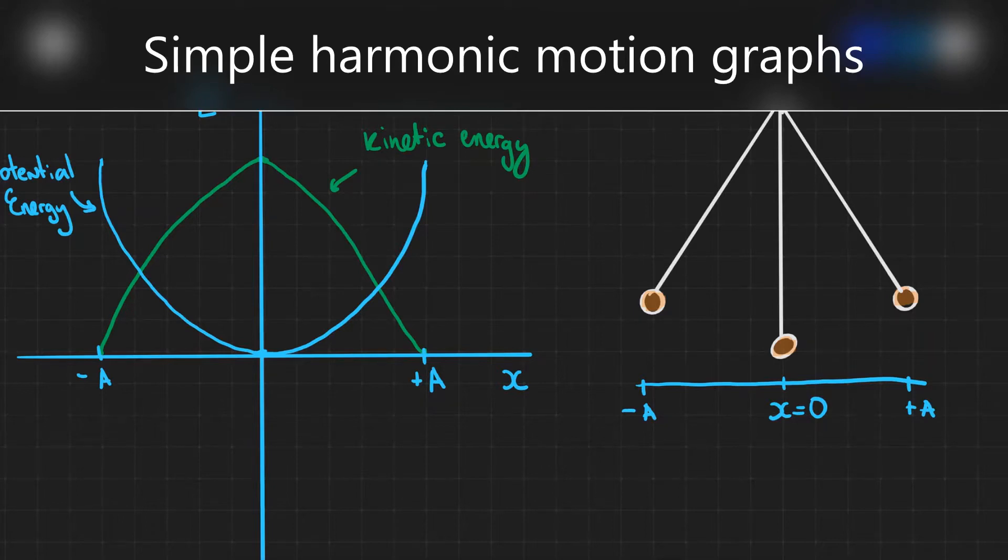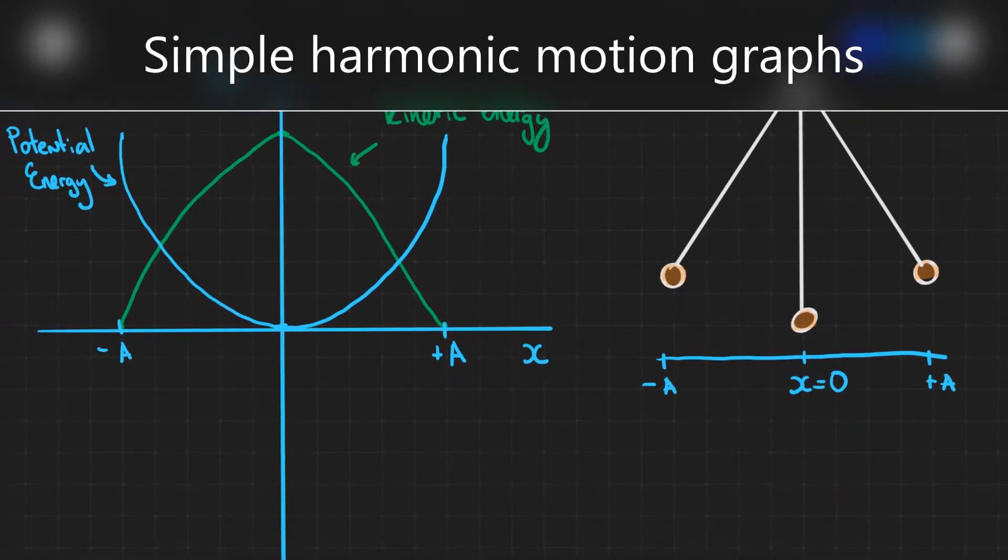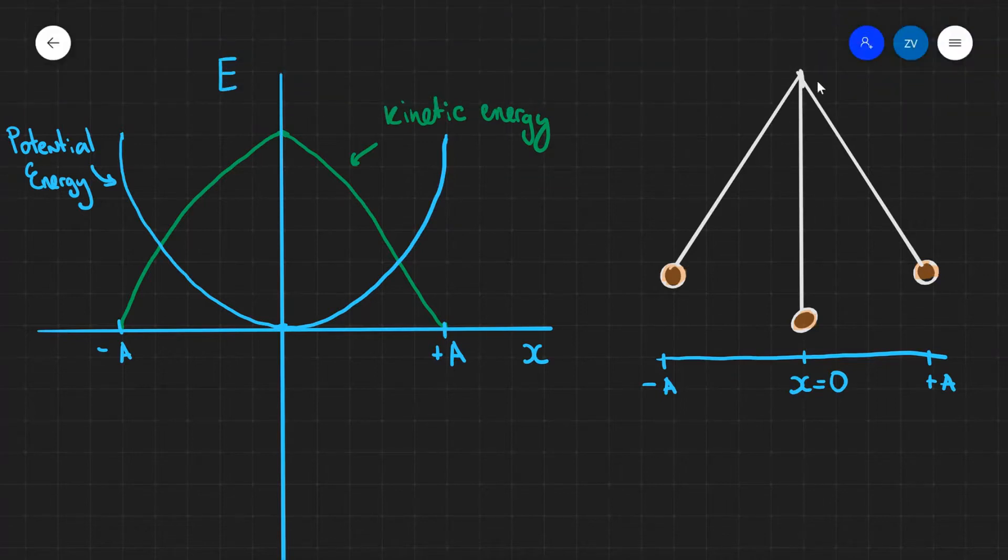Today we're just going to be looking at a quick explanation of the energy graph against displacement for simple harmonic motion. As an example, we have the motion of the pendulum illustrated over here on the right.